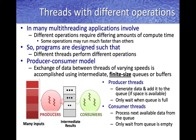Certain threads are classified as producers and others as consumers — how you classify them is totally up to you based on the application. The key is the finite-size queue, which is absolutely important. There is a finite-size queue used to balance the work between producers and consumers: producers generate data into the queue, and consumers remove data from that intermediate shared queue and work on it.